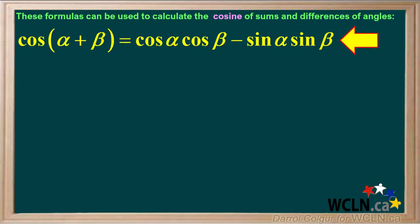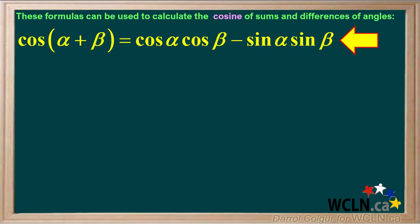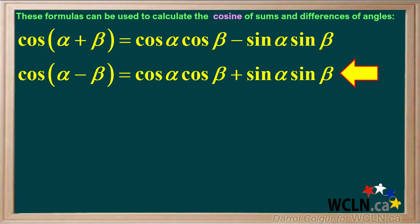If alpha and beta are two angles, cos(alpha + beta) equals cos alpha cos beta minus sin alpha sin beta, and cos(alpha minus beta) equals cos alpha cos beta plus sin alpha sin beta.